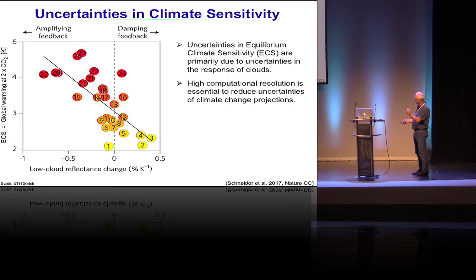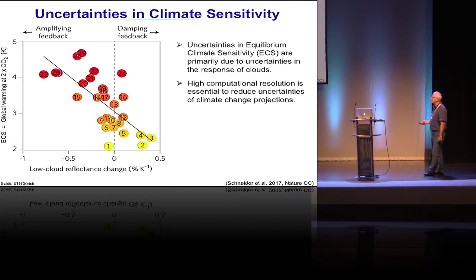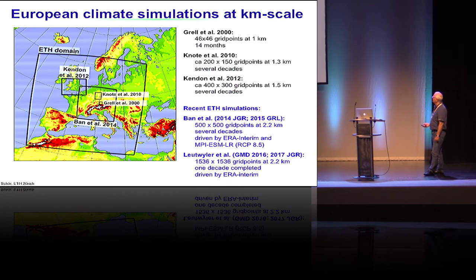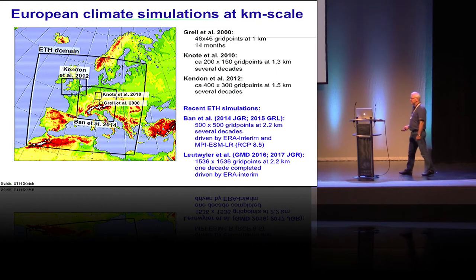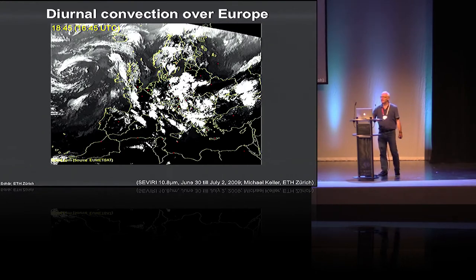We've seen that high resolution is key. The second point is: how realistic are these models? I'll show results from our simulations on a large domain used in the study of David Leutwiller, which has just recently been published. We look over the European continent, which is a useful area to study, particularly in the summer season where we have a lot of convection.